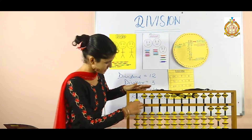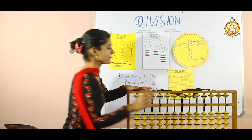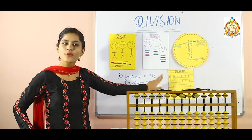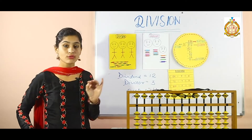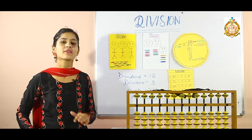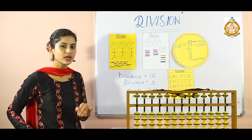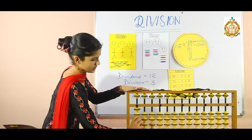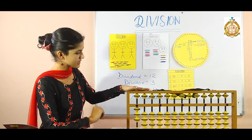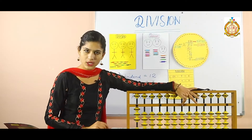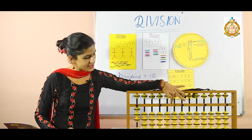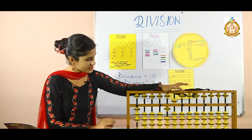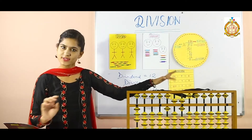Let us do another sum. Clear the abacus scale. Next sum: 156 divided by 3. Our divisor is 3 and our dividend is 156. Firstly, keep the divisor — add 3 here. Dividend 156: 1 is on the 100s place, 5 is on the tens place, and 6 is on the units place. 1, 5, and 6 are added.